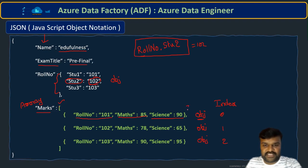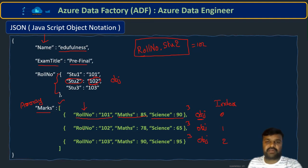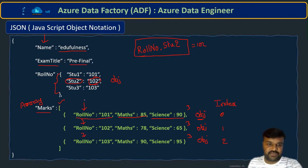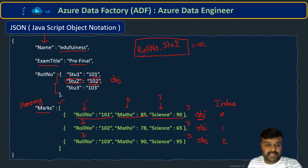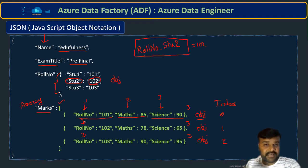Every object structure must be the same — the same number of pairs. In this case we have three fields here, three here, and three here. Not only that: in the first object the first field name is role number, so the second object's first field name must also be the same, and the third object's too. Field names in every object of the array must be the same; only the values may change.